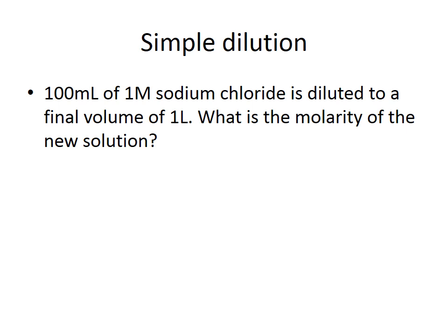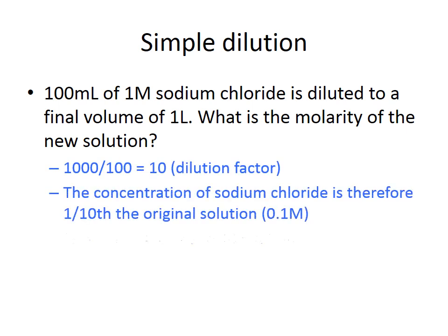In this example of a simple dilution — a one-step dilution — 100 millilitres of 1 molar sodium chloride is diluted to a final volume of 1 litre. To find the molarity of the new solution, we calculate the dilution factor by taking the final volume of 1000 millilitres and dividing by the starting volume of 100 millilitres, giving a dilution factor of 10. The concentration of sodium chloride has therefore been reduced by a factor of 10 and is now 0.1 molar.